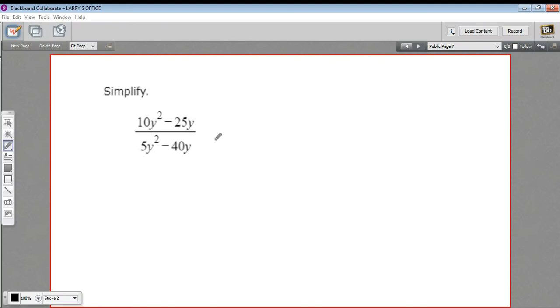In this problem, we're being asked to simplify this rational expression. And a rational expression is just an expression that's in the form of a ratio or a fraction. So we've got 10y squared minus 25y over 5y squared minus 40y, and we want to simplify this.